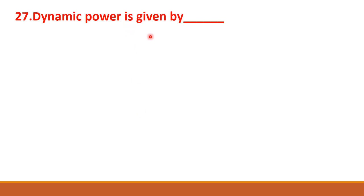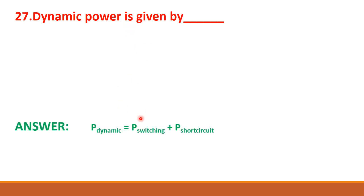Next question: dynamic power is given by dash. Dynamic power is equal to switching power plus short circuit power.